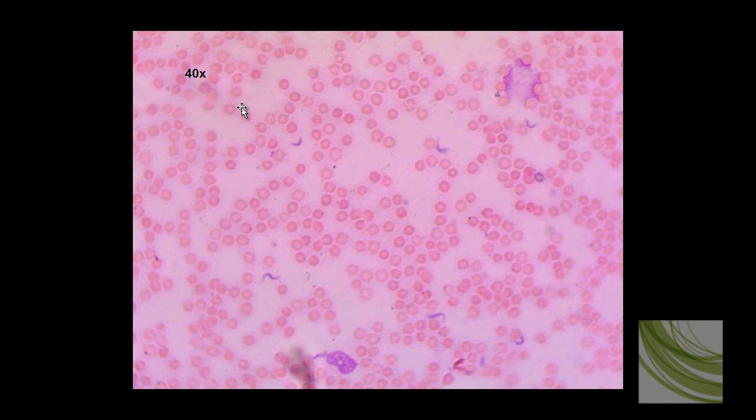It's not until we get to the 40X objective that we can see the parasites. Now this is a flagellate, meaning it has a flagella, and we can see it there, and it's outside the blood cells, so it lives between the erythrocytes, and we can also see the occasional leukocyte.